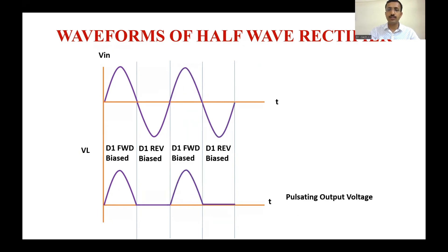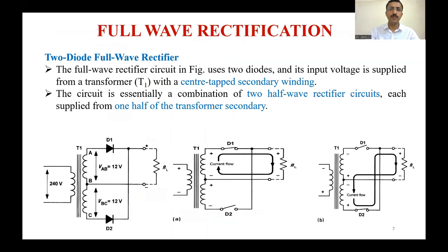This continuously repeating output is called pulsating output voltage. In the case of full-wave rectification, we have two diodes, D1 and D2, and the diodes alternate between forward and reverse bias.